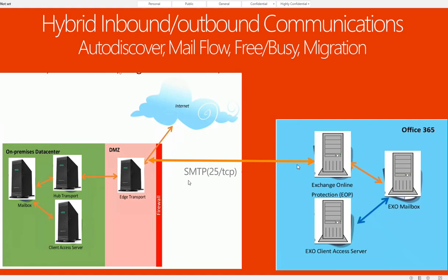As you can see here, the hub transport role is communicating with the Exchange Online server. There's Office 365, there's an Exchange mailbox server, and there's a client access server. Your hub transport communicates through port 25 to Exchange Online, so port 25 must be open for the communications. The hub transport server requires a third-party certificate — you must use a third-party certificate for communication that uses TLS through port 25.